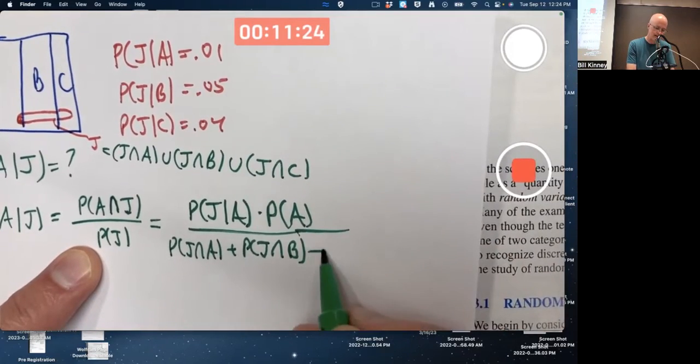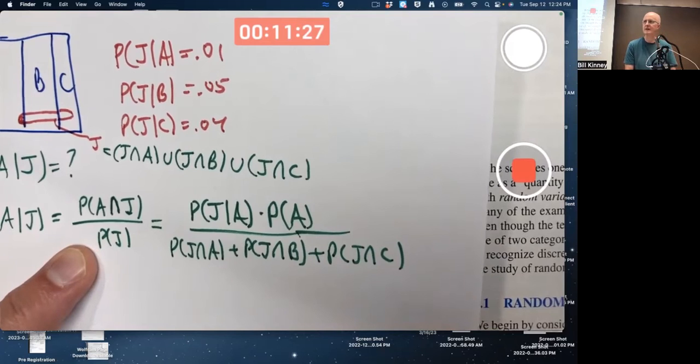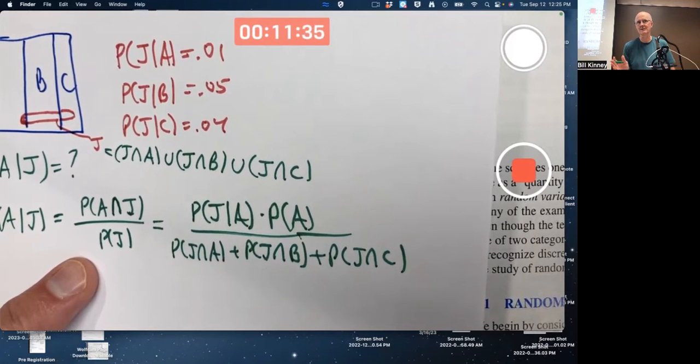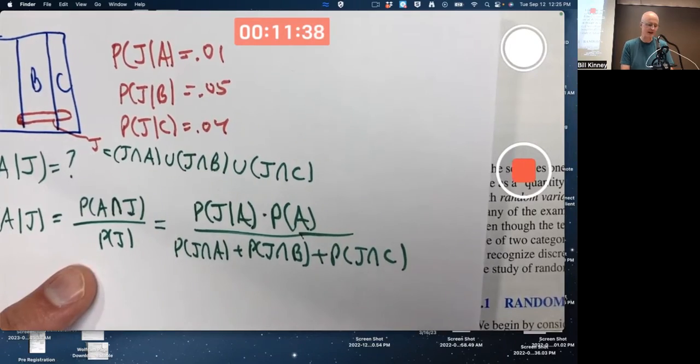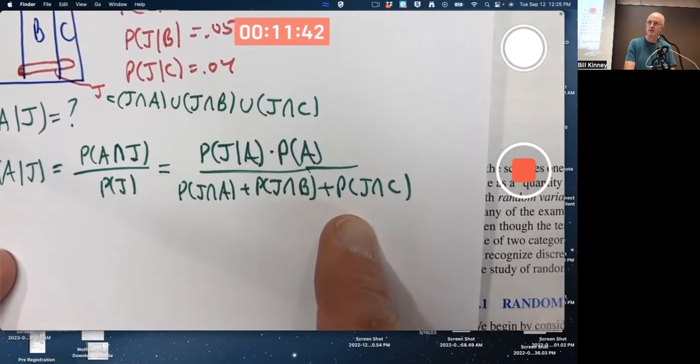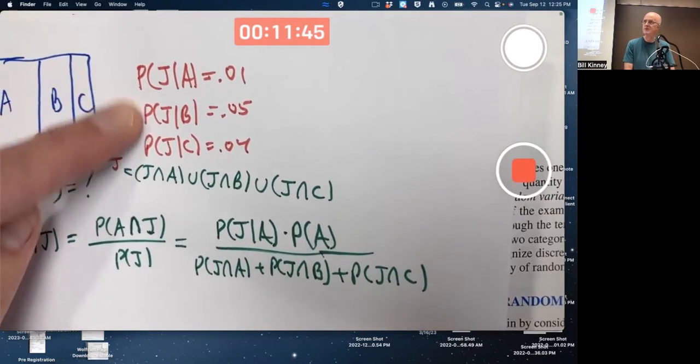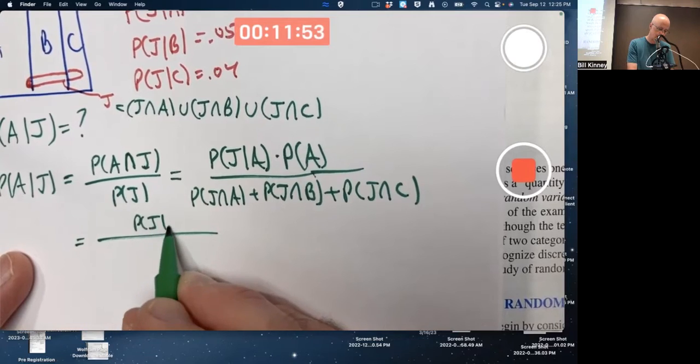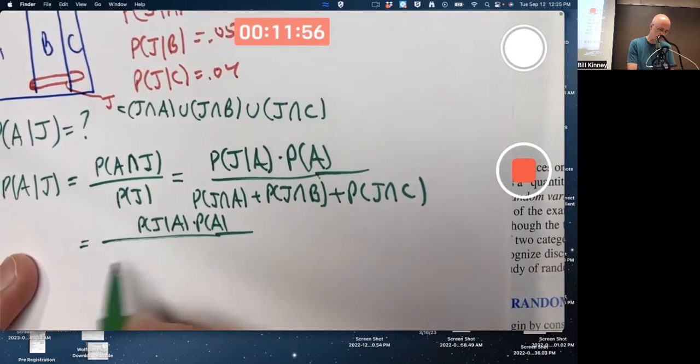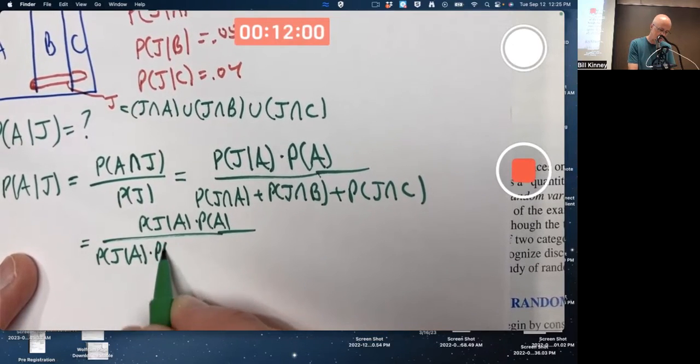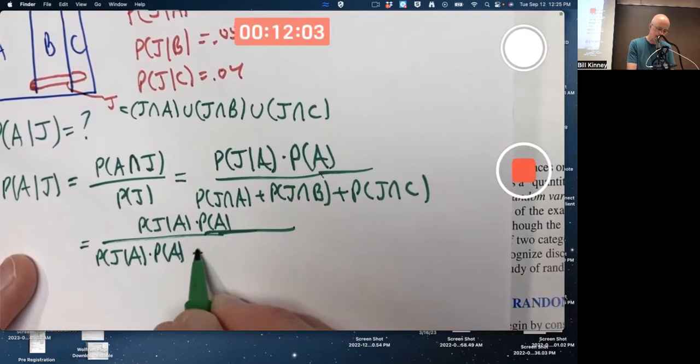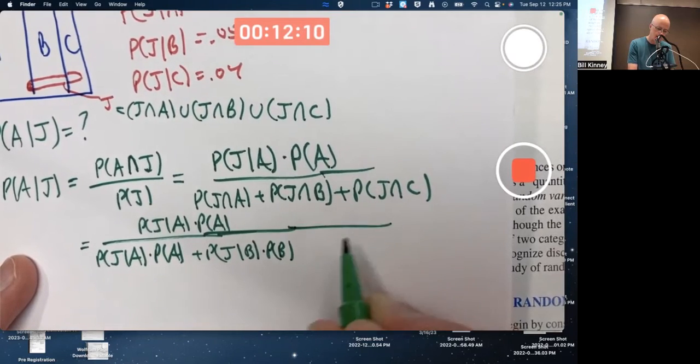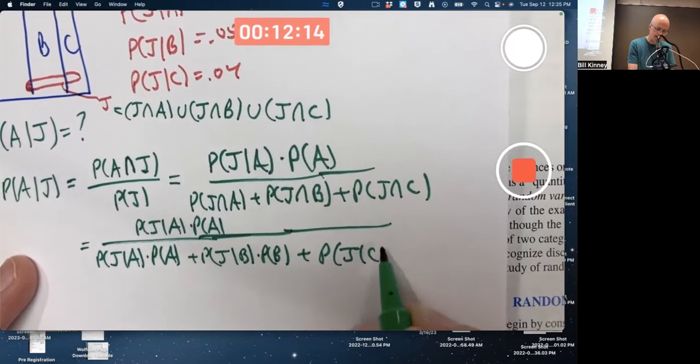I mean, maybe on an exam, it feels too slow to try to rethink about this from scratch. But I think it's not a bad idea to do it on homework. And as you're prepping for exams, it's not a bad idea to do this. And again, with each of these three terms, you use the general multiplication rule with these three conditional probabilities. And in fact, the first one is going to be the same as the numerator. The conditional probability of J given A times the probability of A. The second one is the conditional probability of J given B times the probability of B plus, finally, the conditional probability of J given C times the probability of C.